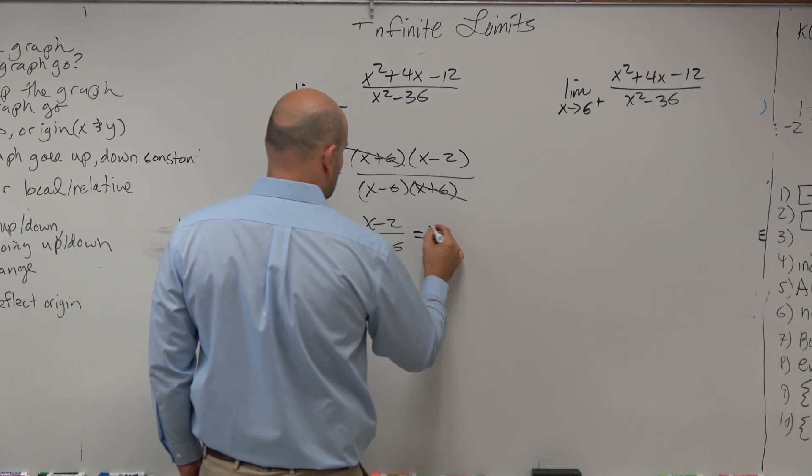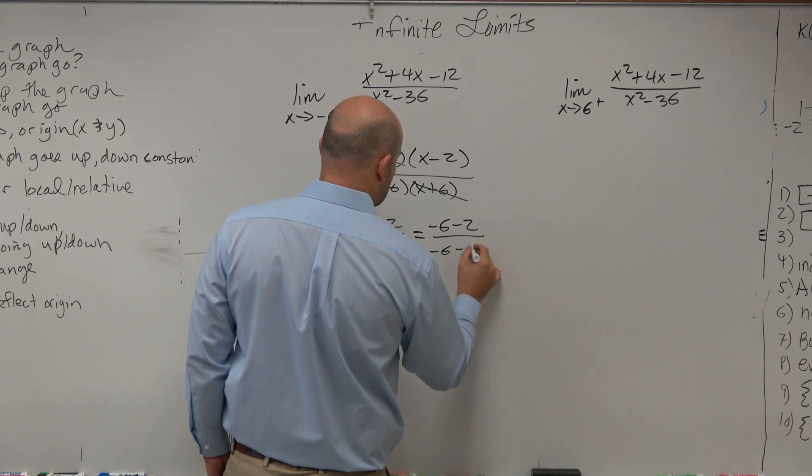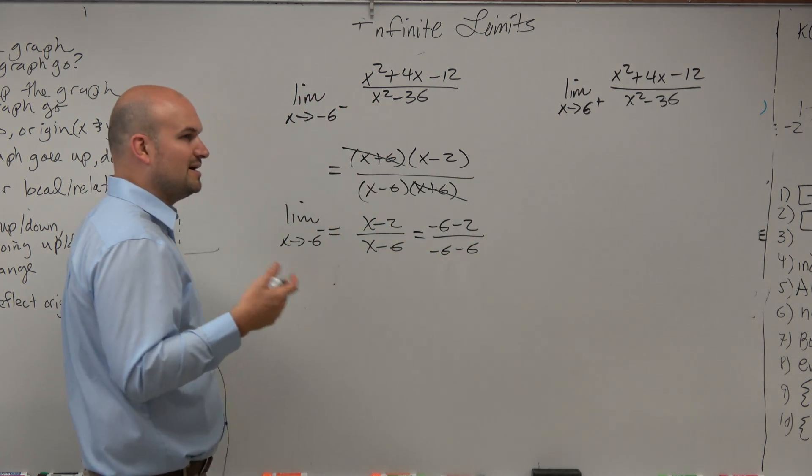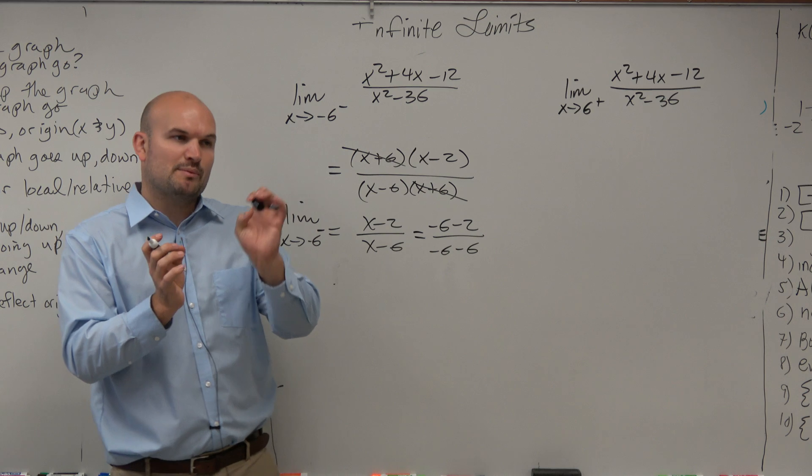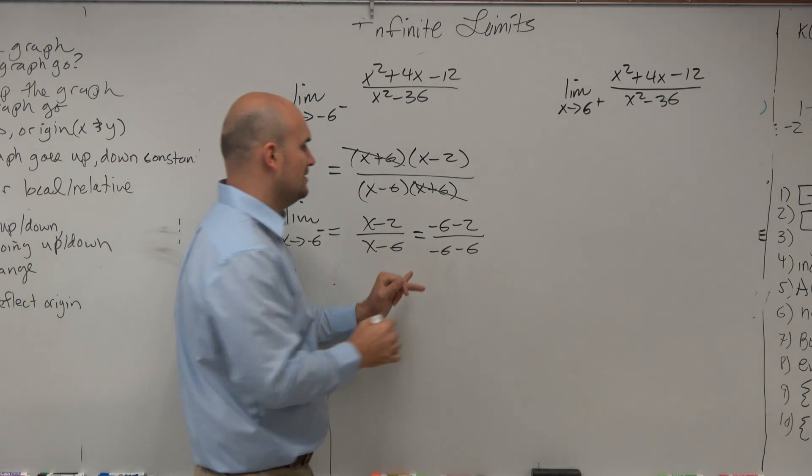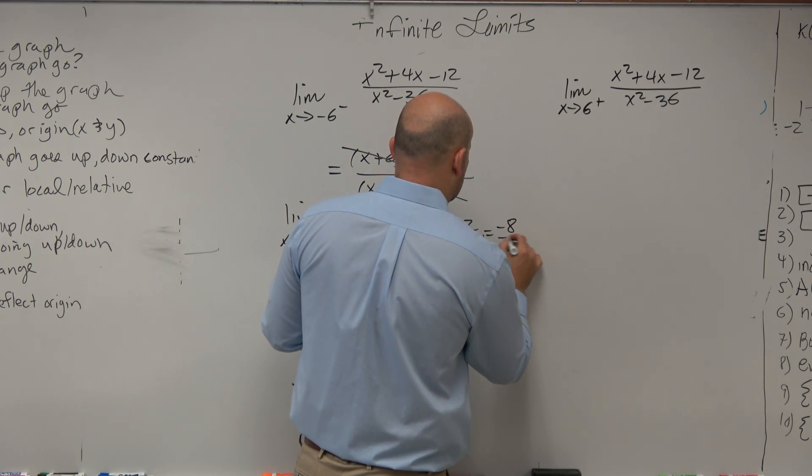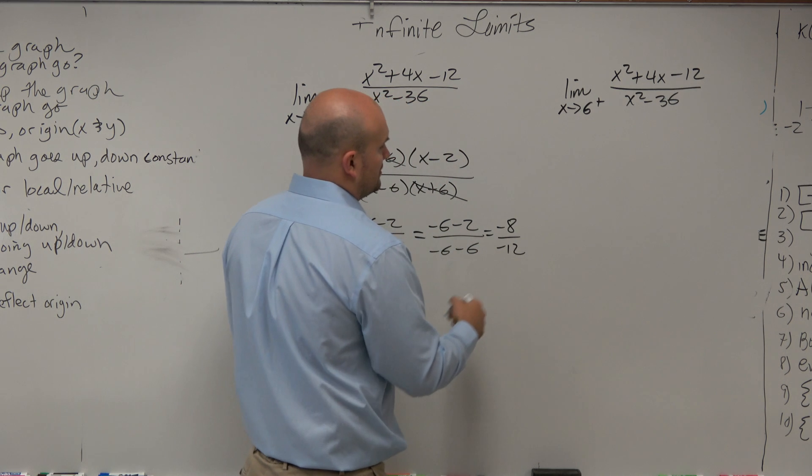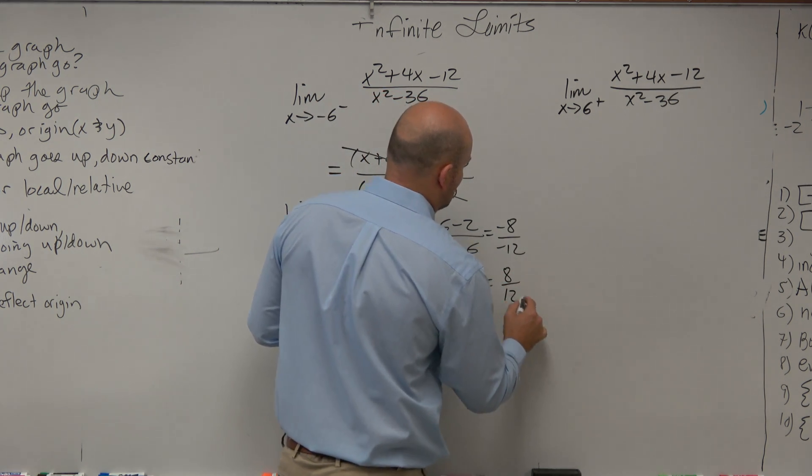So that equals negative 6 minus 2 over negative 6 minus 6. So remember, guys, we only want to use these numbers when we're approaching something from the left and the right. So therefore, we get negative 8 over negative 12, which is going to be 8 twelfths.